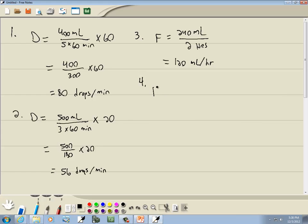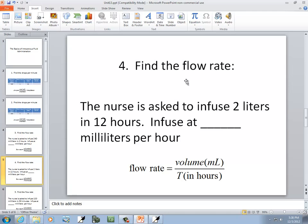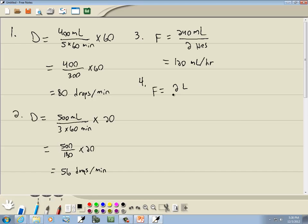Now number 4. It says nurse is asked to infuse 2 liters in 12 hours. Well, the top part has to be in milliliters. If I remember my metric conversion, King Henry doesn't usually drink chocolate milk. Our units is liters, and we're going to move it three places to the right for the milliliters. If I were to put a decimal, it would be right here. So the top part becomes 2,000 milliliters over 12 hours.